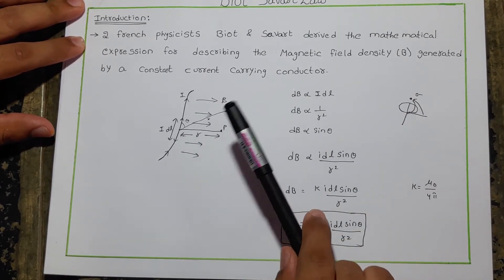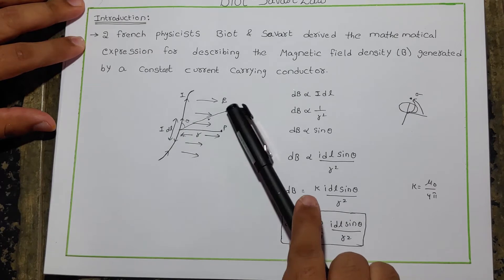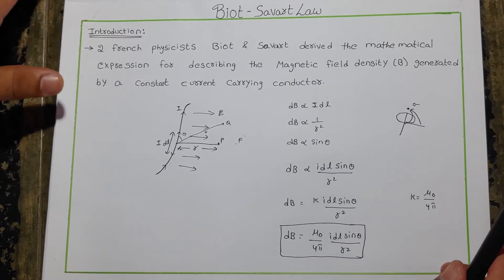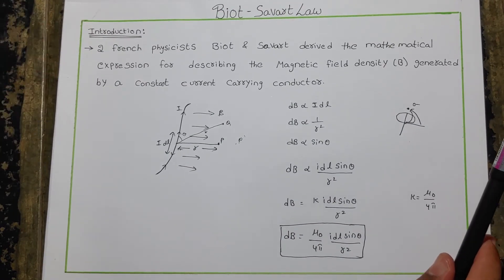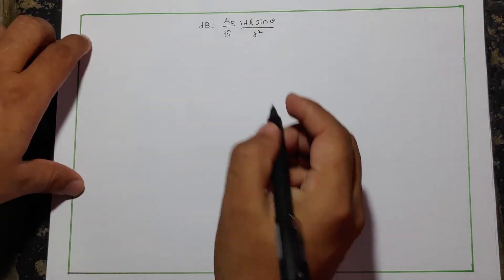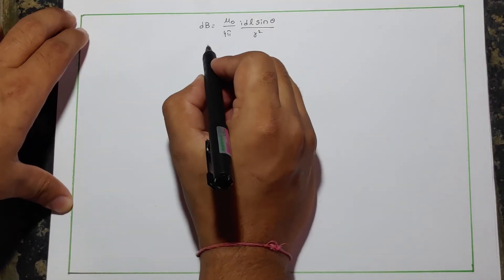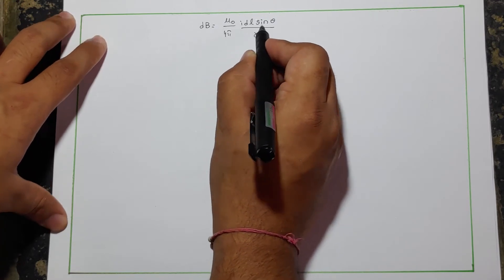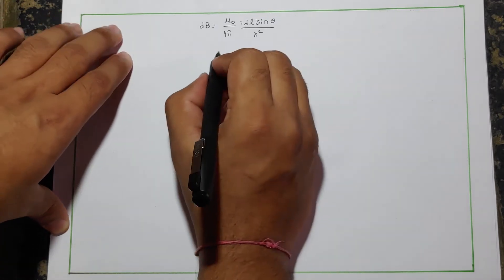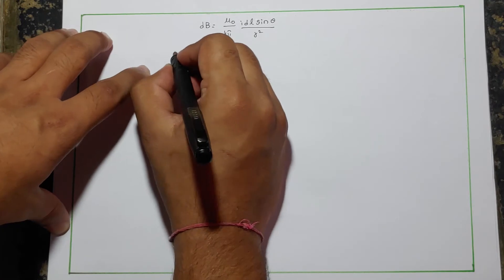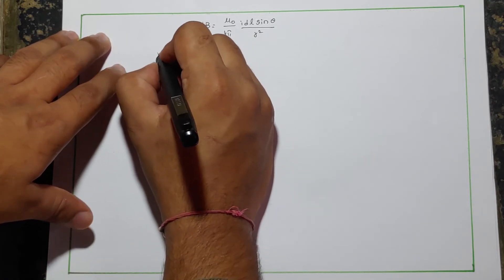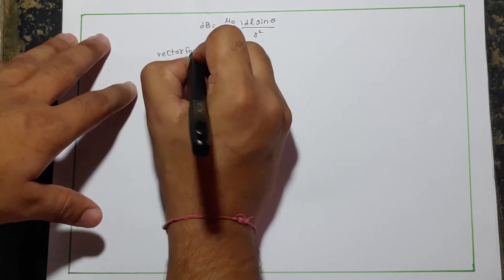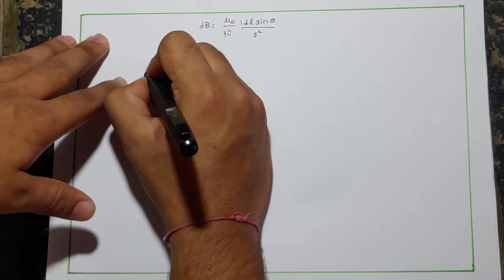Now let us extend this to the vector form. From the previous calculation we have: dB = (μ₀/4π)·I·dl·sin(theta)/R². Now we have to find the vector form for the Biot-Savart law.